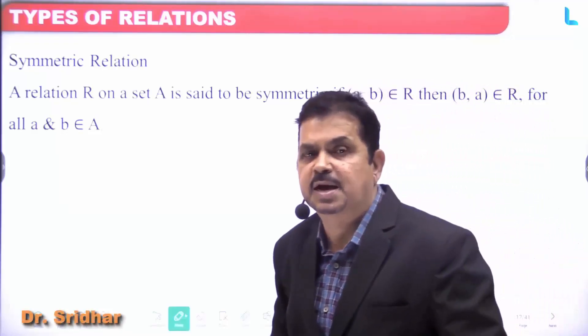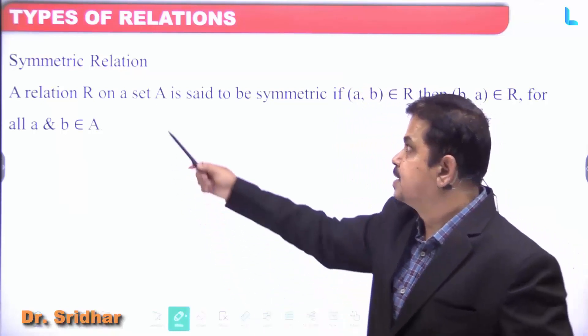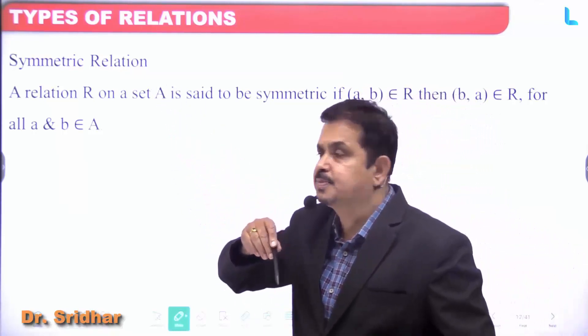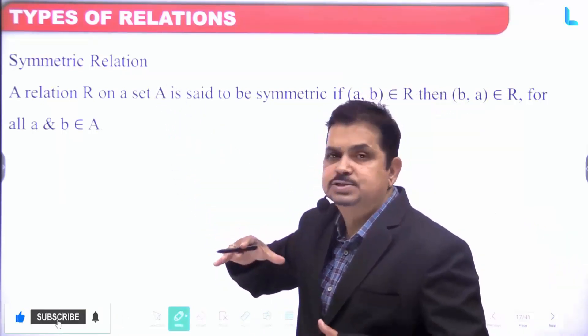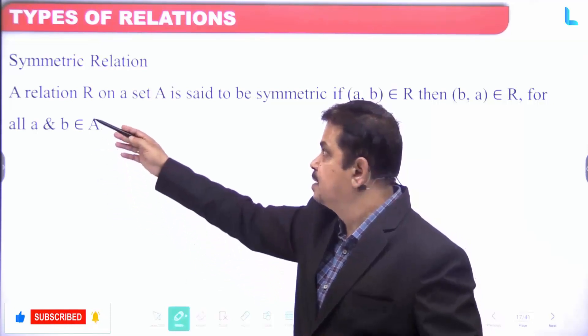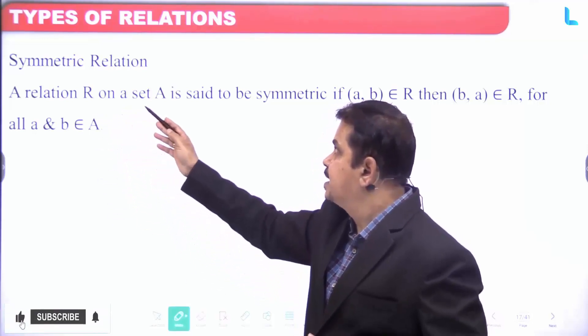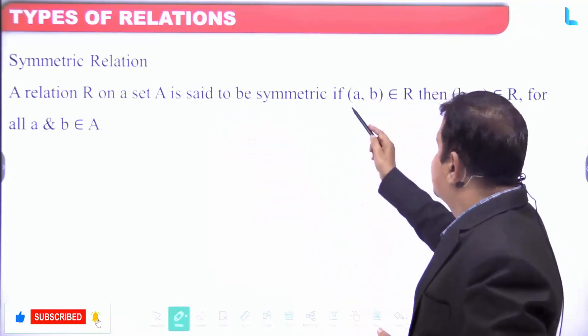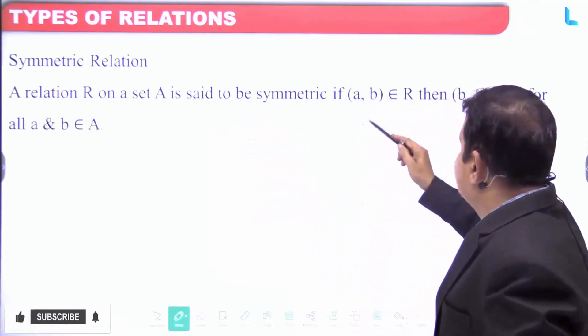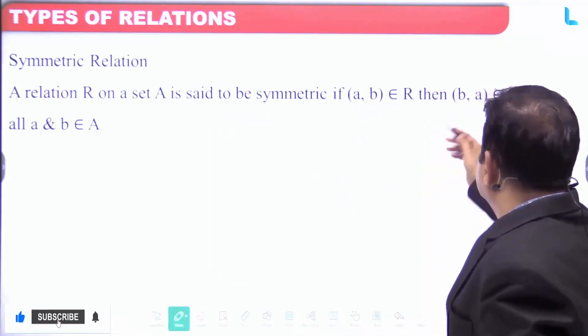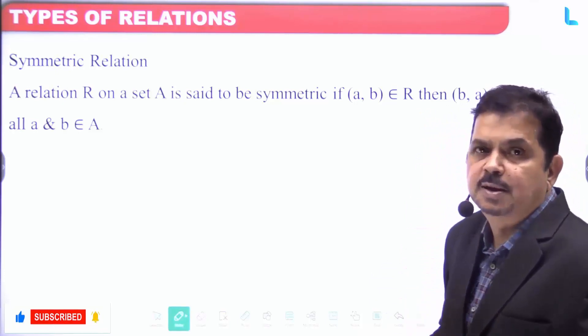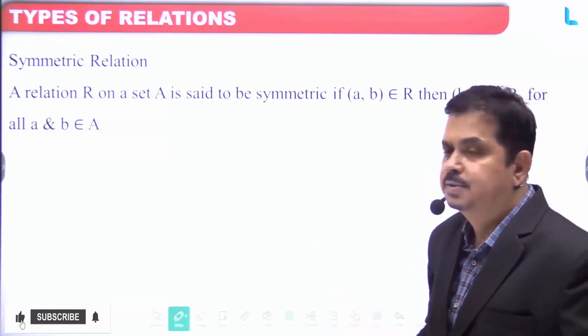Let us try to understand another type of relation, the symmetric relation. A relation R on a set A is said to be symmetric if (a, b) belongs to R, then (b, a) belongs to R, for all a and b belongs to the set A.